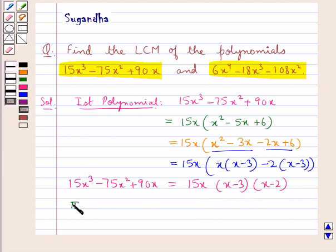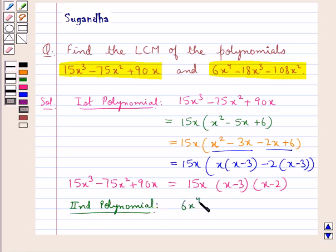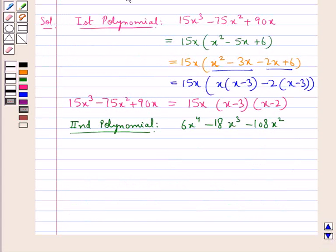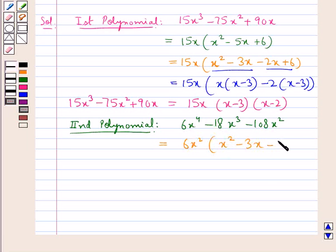Now we consider the second polynomial, which is 6x⁴ minus 18x³ minus 108x². We write this in a factorized form. Now 6x² is a common factor to all three terms of this polynomial, so we get 6x² into (x² minus 3x minus 18).